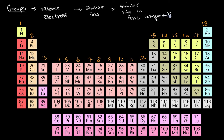For the sake of this video, I'm going to focus most on the extremes of the periodic table — the groups at the left and the right — because those are the closest to having a full outer shell, either by losing electrons or by gaining electrons. So just to remind ourselves, what does it mean to have a full outer shell?